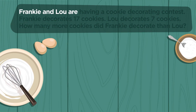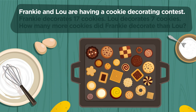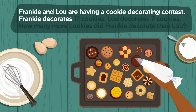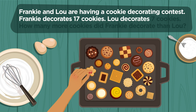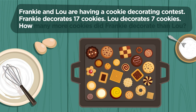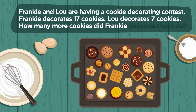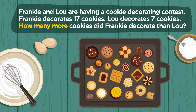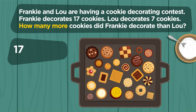Try one more example. Frankie and Lou are having a cookie decorating contest. Frankie decorates 17 cookies. Lou decorates 7 cookies. How many more cookies did Frankie decorate than Lou? 'How many more' are the key words that tell you to use subtraction to solve. You must subtract 17 minus 7 to find the difference, or how many more cookies Frankie decorated than Lou.